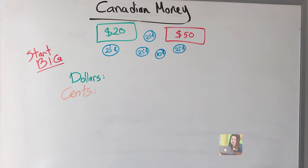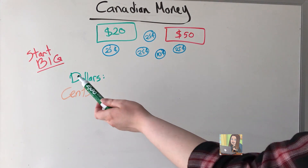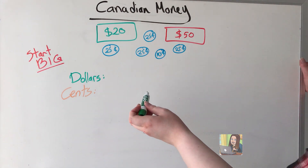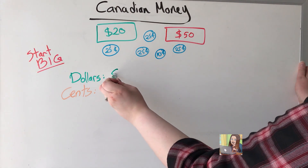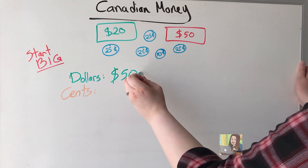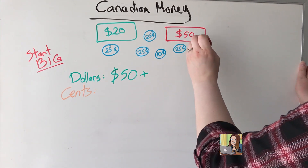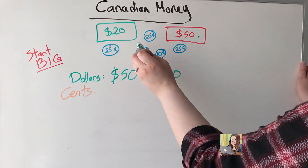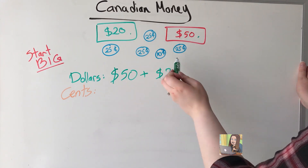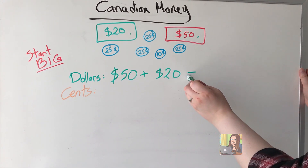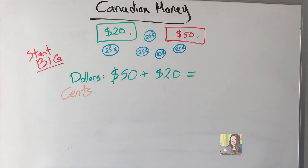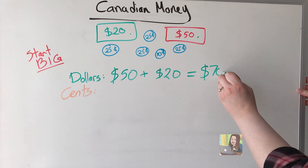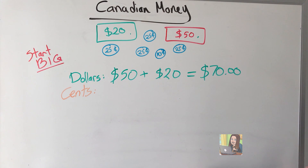For our second example, we're again going to start with the bigger numbers and go with the dollars first. I have $50 over here and $20 there. The rest are cents. So $50 plus $20 gives me $70.